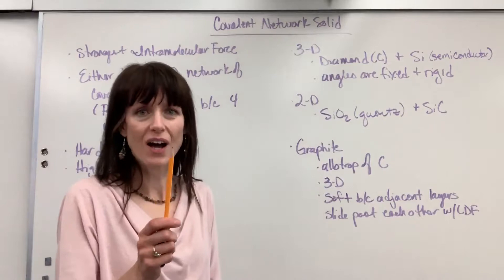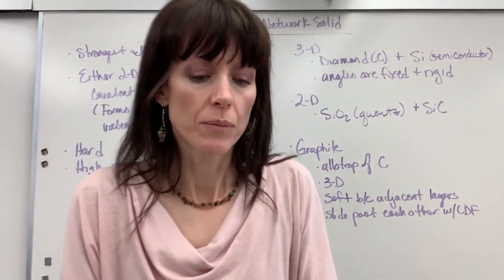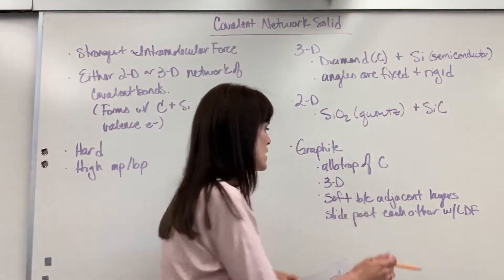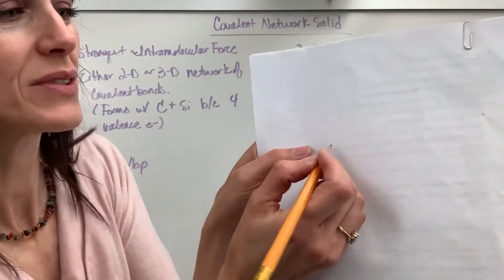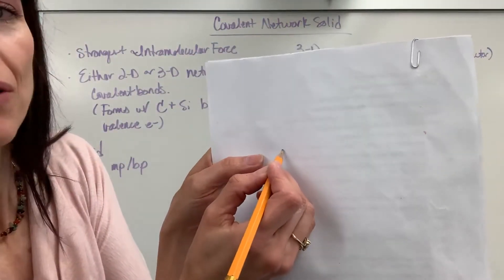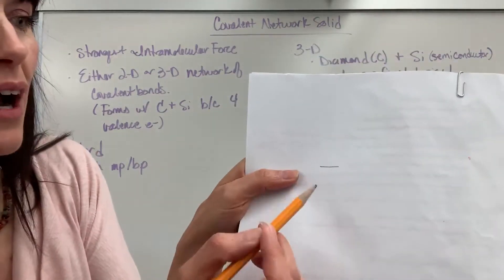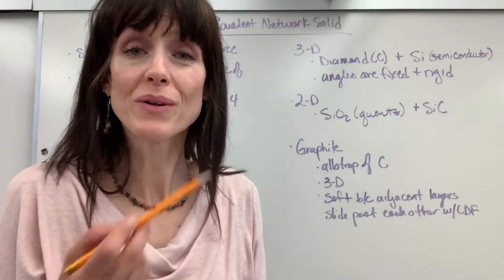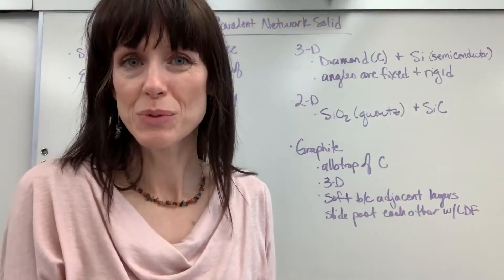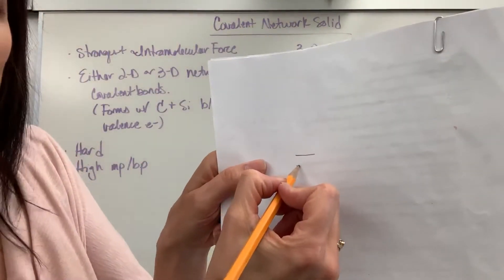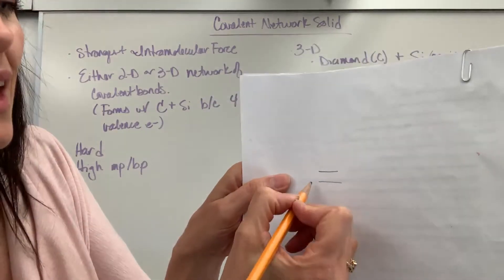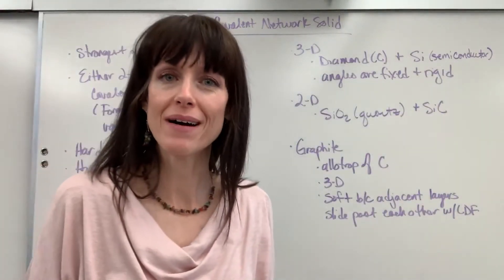Now, the reason why this is soft is because it has these layers that slide past each other. So you've seen this a million times. Am I right? It leaves behind the graphite. The reason why it leaves behind that graphite is what holds these together is London dispersion forces. And so I apply enough force to overcome the London dispersion forces and leave a layer of graphite behind.